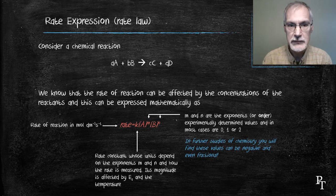And we have the variables A and B, which refer to the concentrations of our reactants, typically in moles per liter.